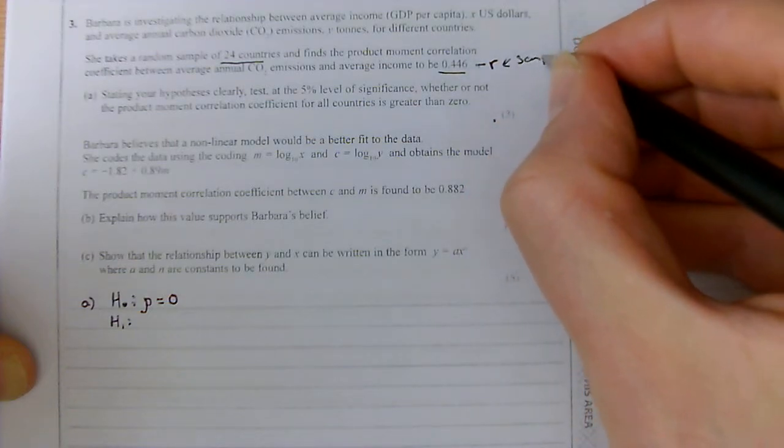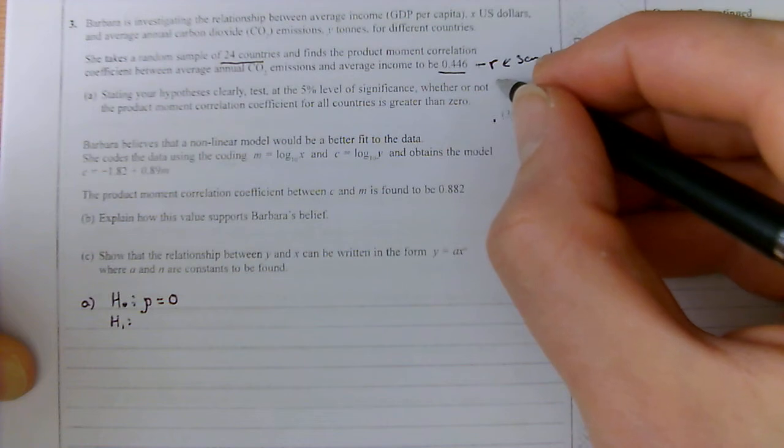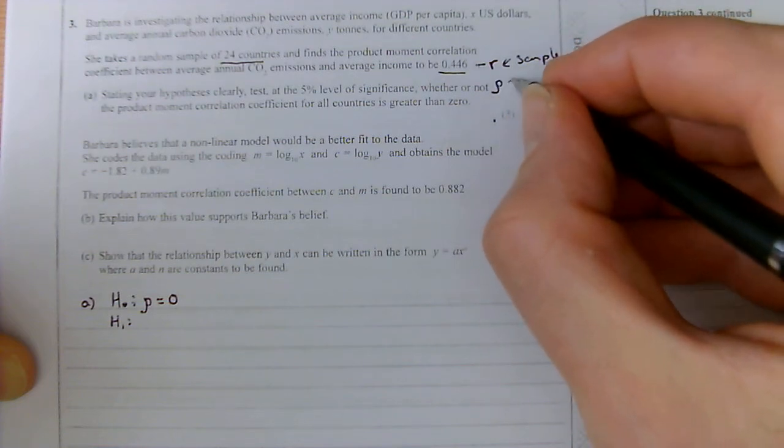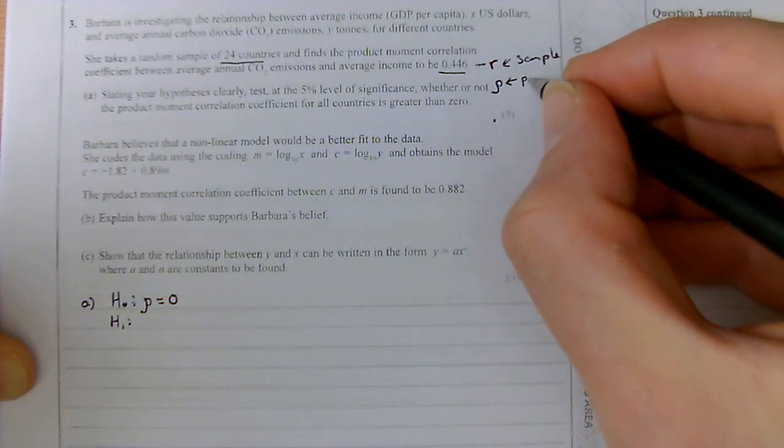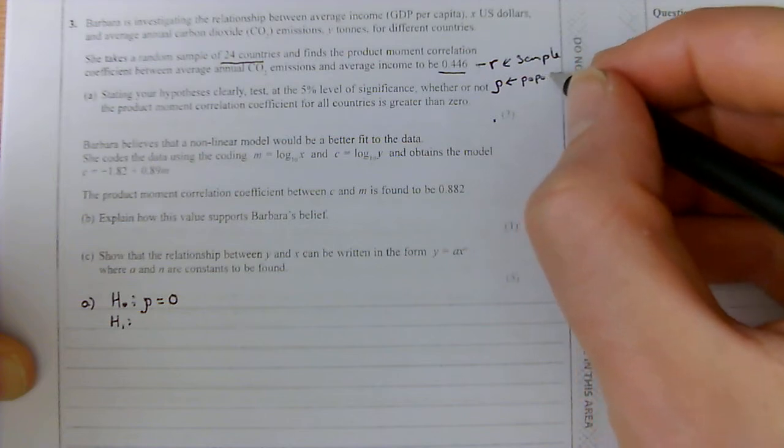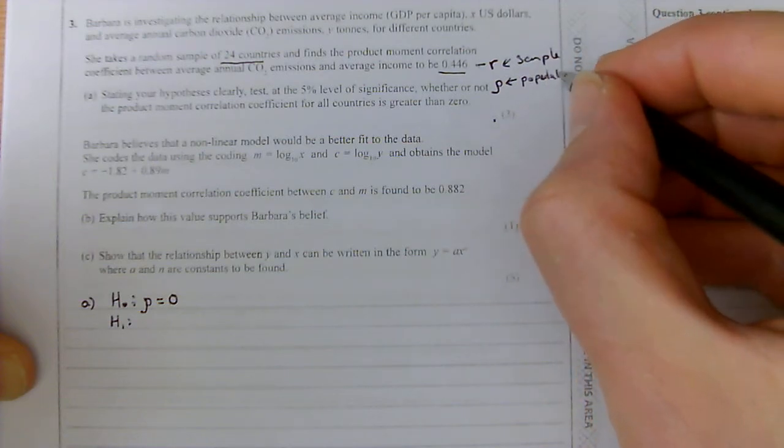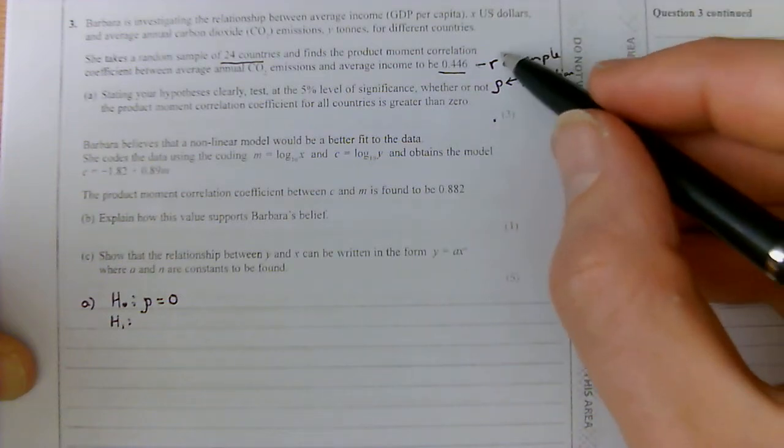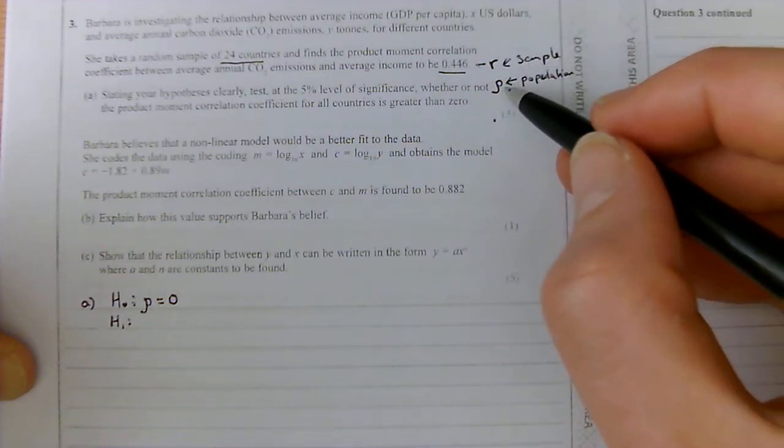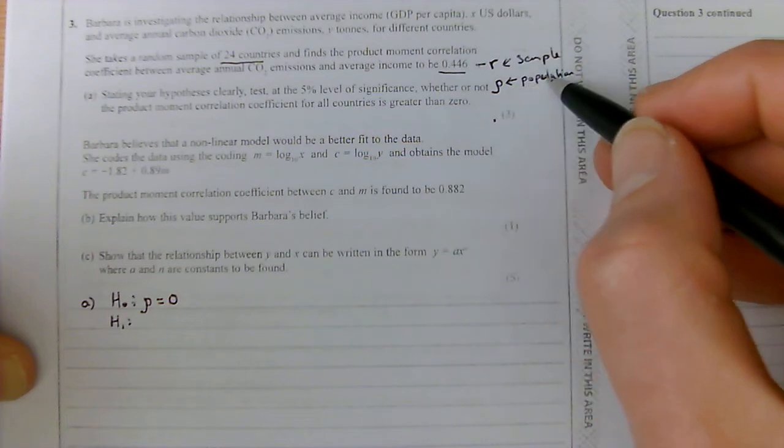When we start looking at the population, we're going to talk about rho as the correlation coefficient in the population. And what we're trying to do, this is called inferential statistics. We're trying to determine from the information from the sample whether or not there is correlation in the entire population.